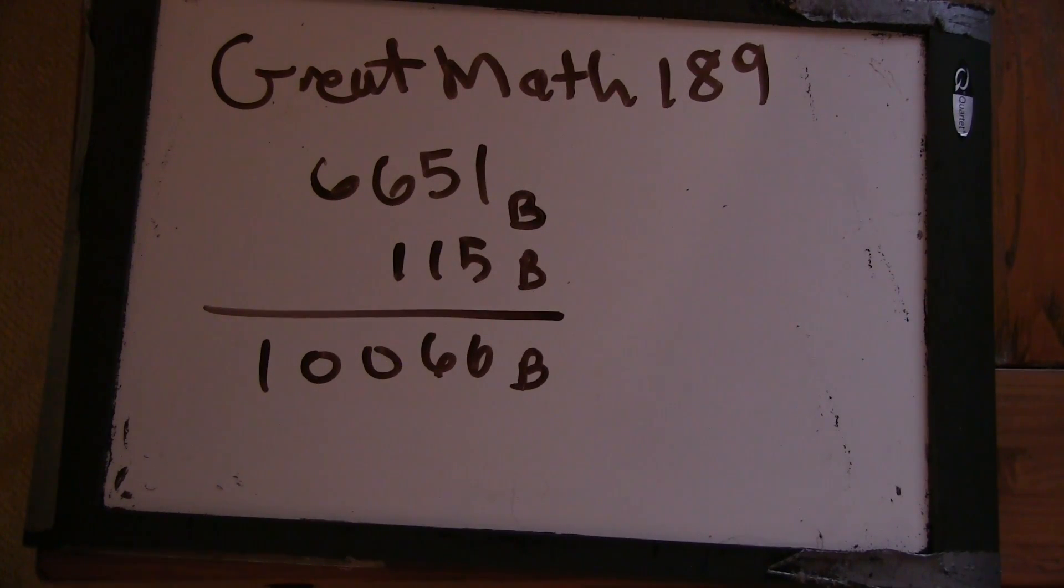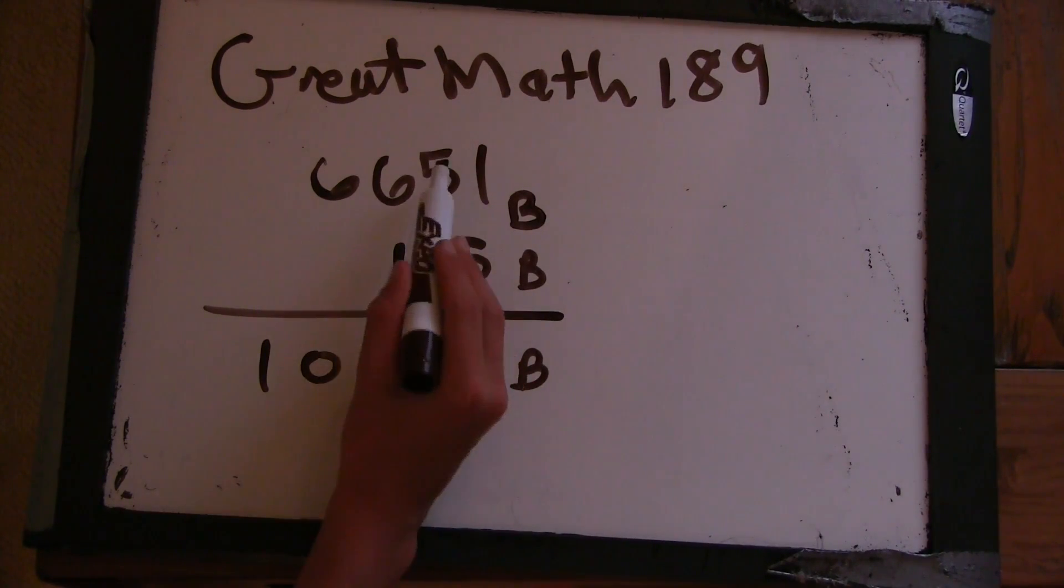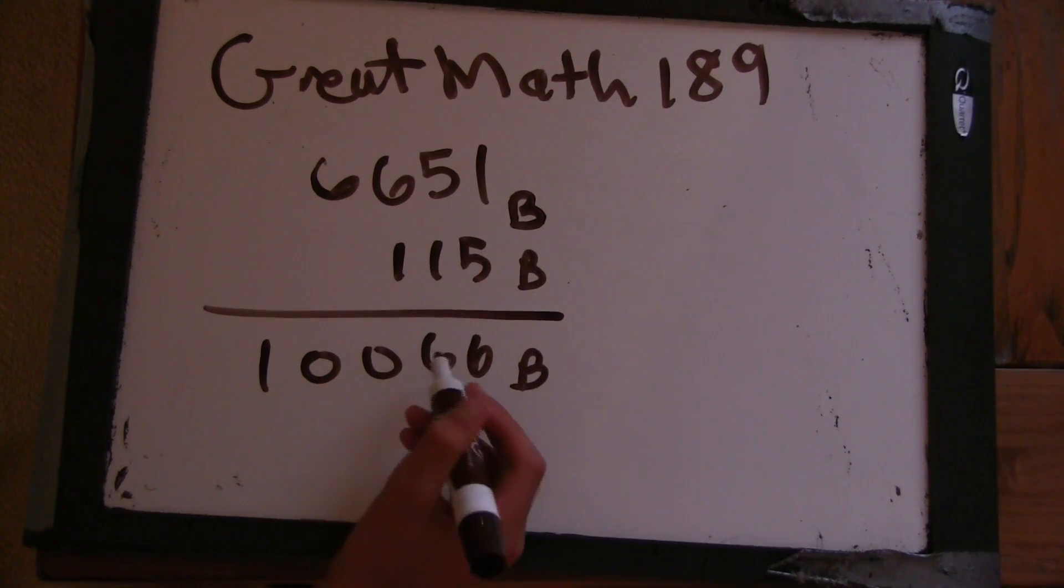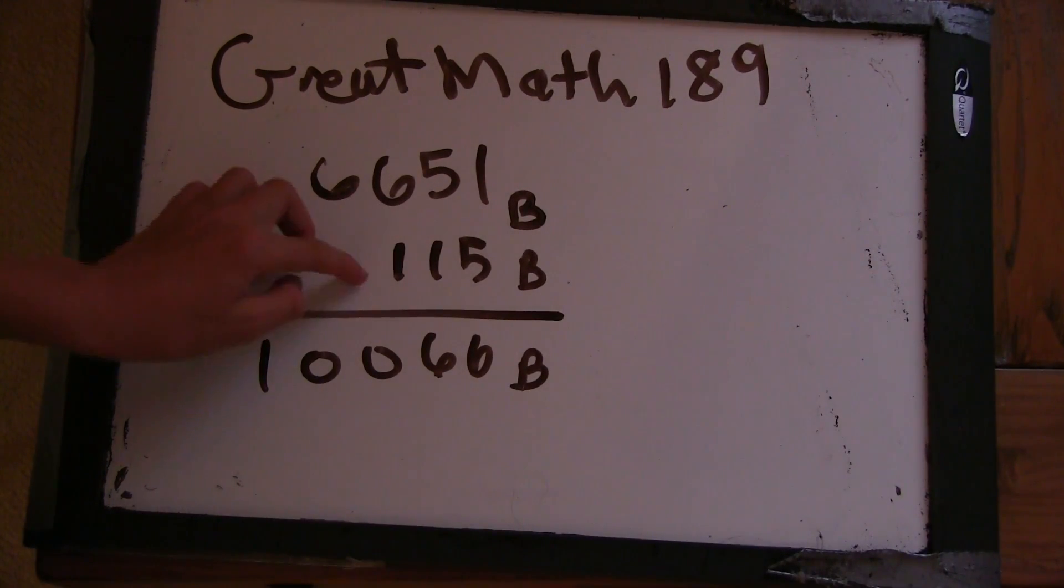Because if it wouldn't, it would not be a 6. So again, when we have the B to the 1, we have 5 plus 1, 6 again. Now, 6 plus 1 goes to 0.